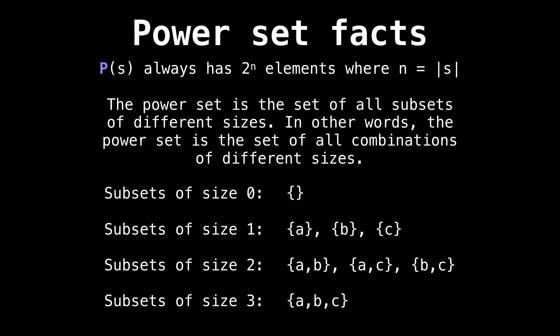This next fact is really neat because of how central it is to the construction of the power set. The power set is the set of all subsets of different sizes put together. Set in other words, the power set is the set of all combinations of different sizes. This is cool because if you have a function that can generate all combinations of a certain size, like you would in Python, then you can easily generate the power set with perhaps two or three lines of code.